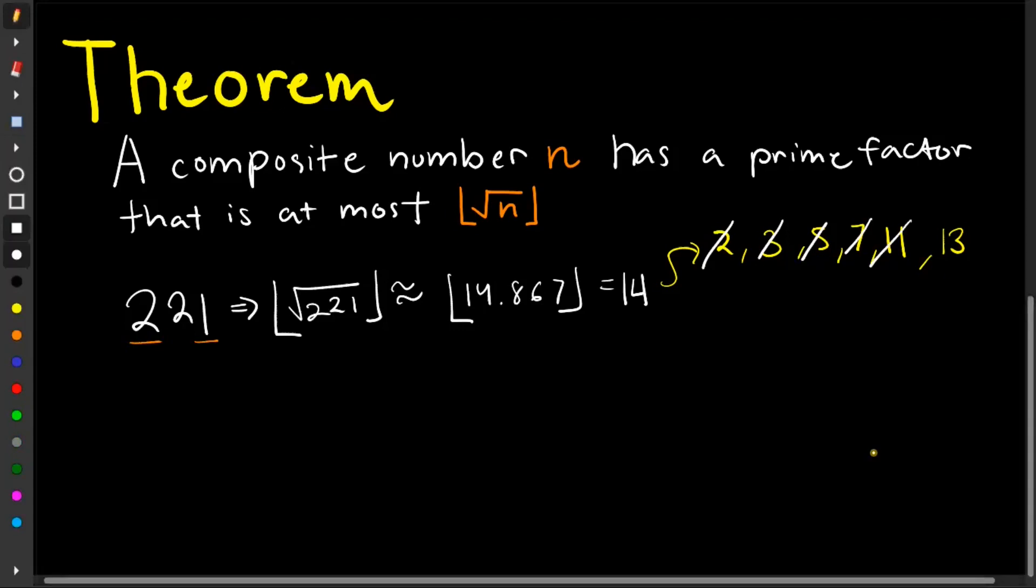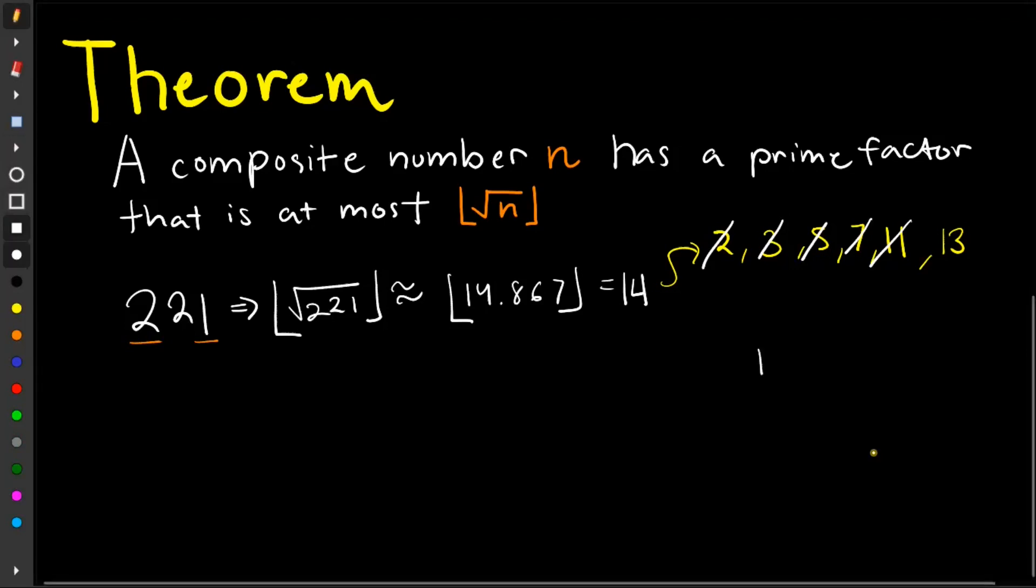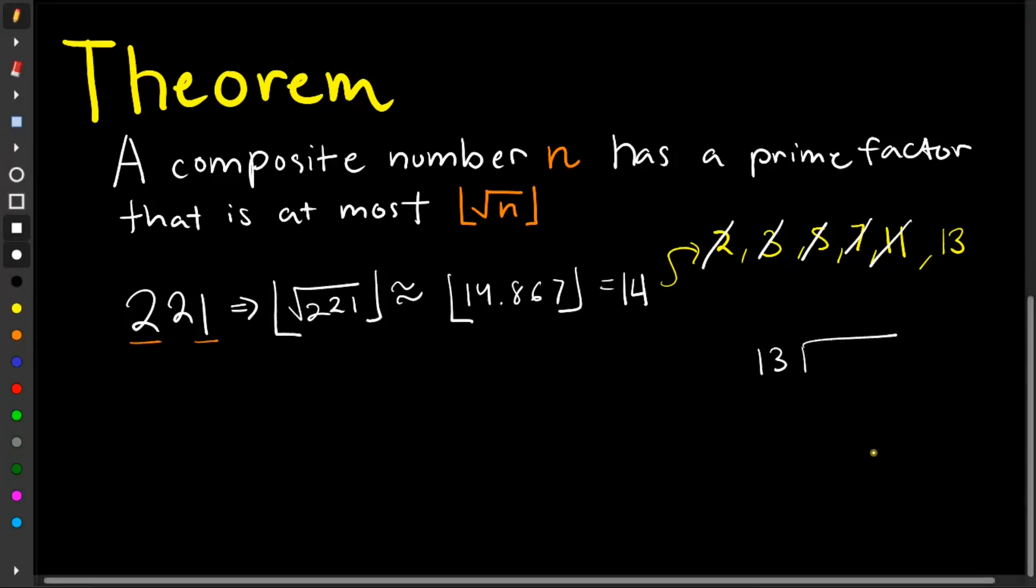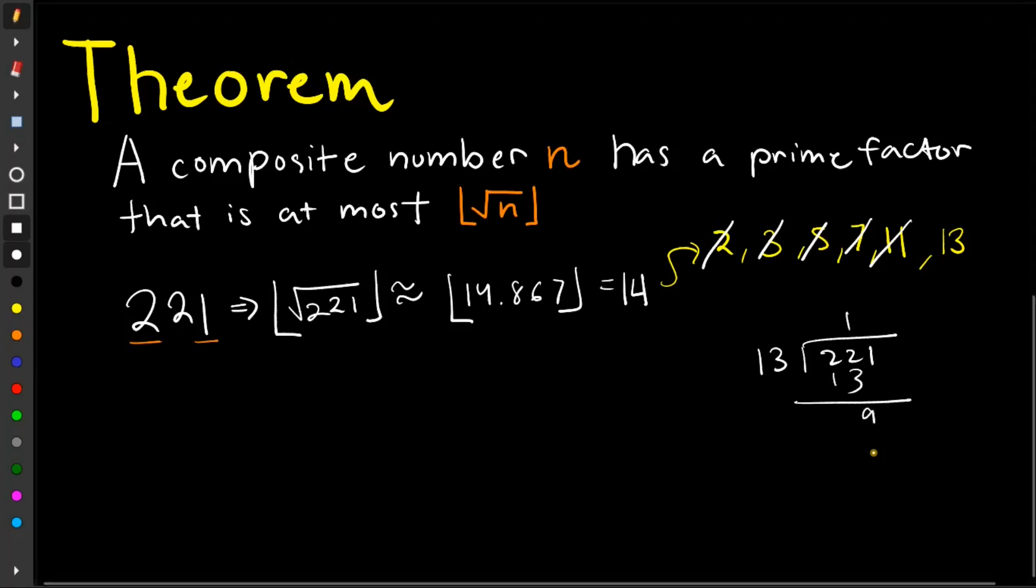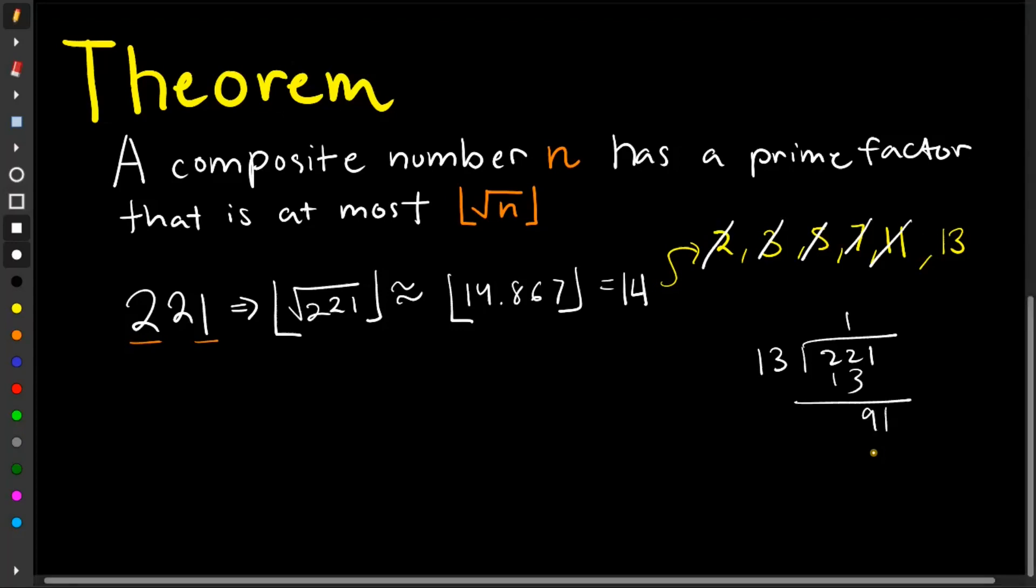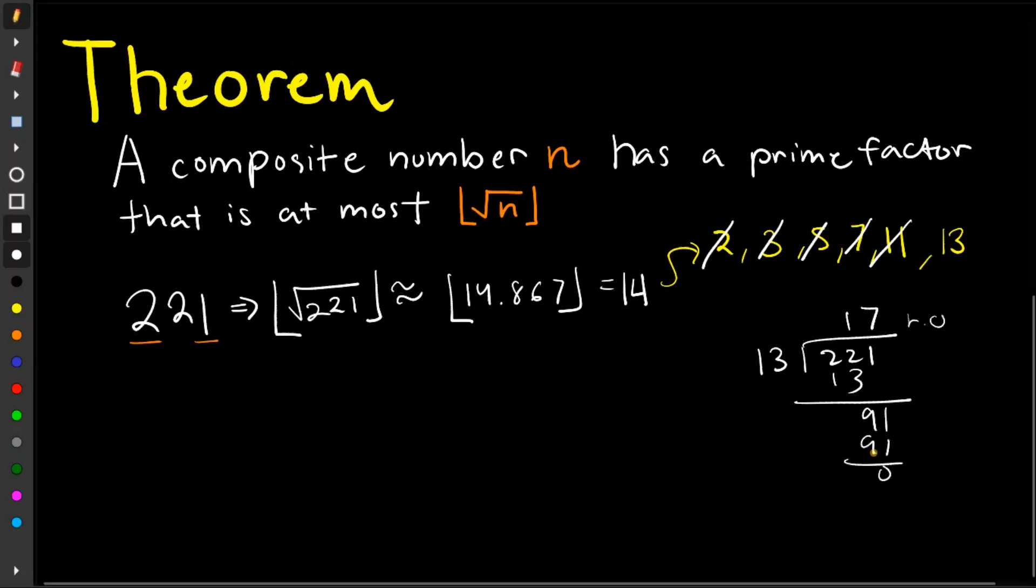How about 13? Since we don't have a divisibility rule for 13, we try to manually divide. So 221 divided by 13 equals 17. So we have found that this number is divisible by 13.